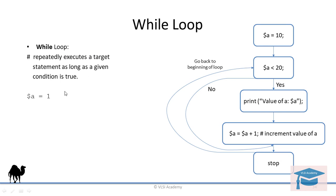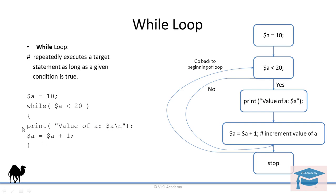Let us say you declare a variable with a value of 10. Then the syntax of the while loop will be something like this: while a is less than 20, you keep on performing specific tasks. Let us say you want to print the value, you increment the value, and close the loop. So it will keep on executing as long as this condition is satisfied — that is, as long as a is less than 20, this value will keep on incrementing and it will keep on printing.